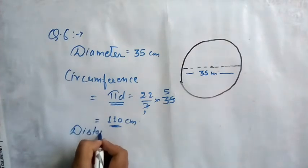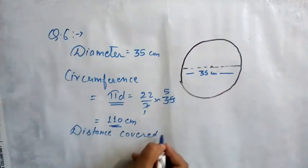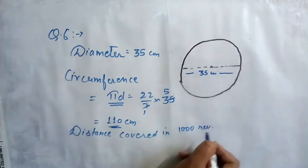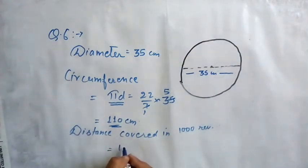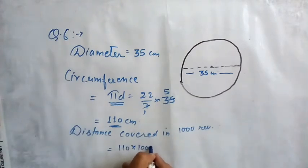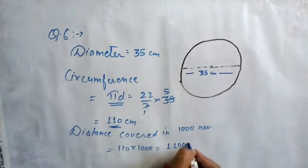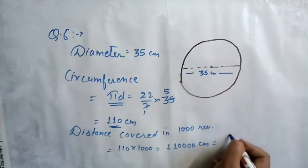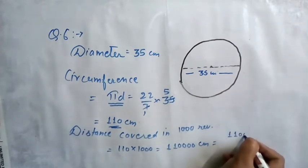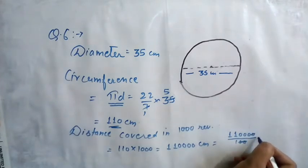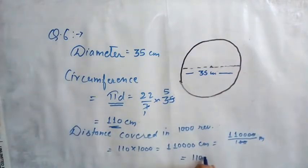Now we have to find the distance covered in 1000 revolutions. In one revolution it covers 110 centimeters, so distance covered in 1000 revolutions will be 1000 × 110, which equals 1,10,000 centimeters, that is 1100 meters. This is your required answer.